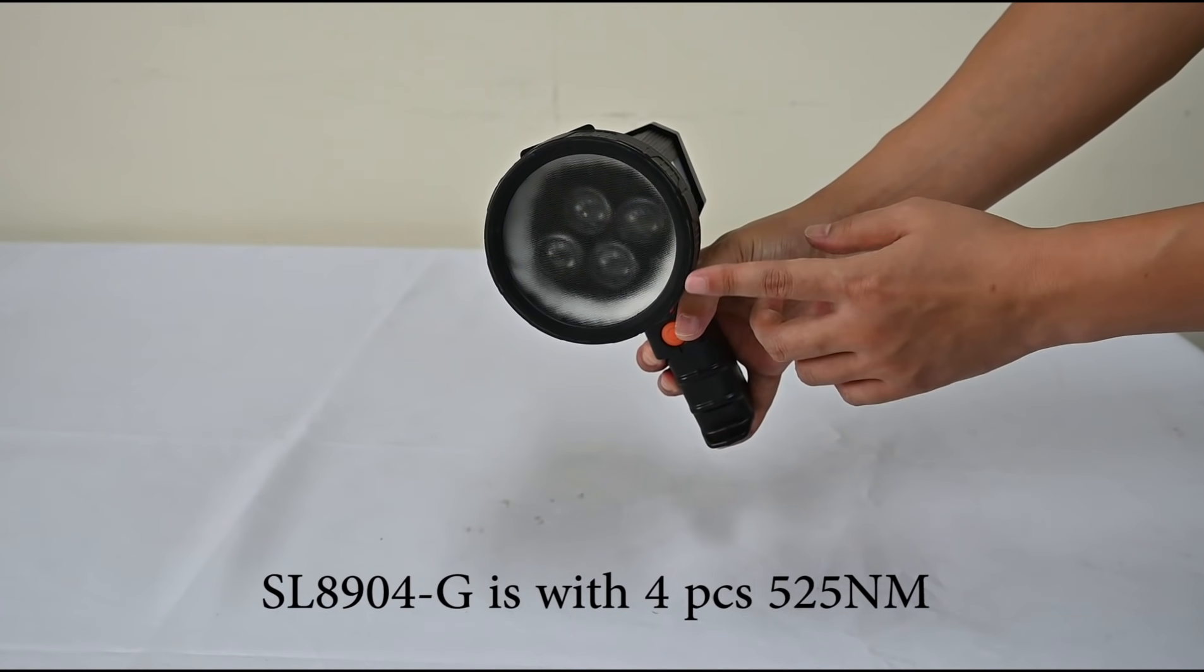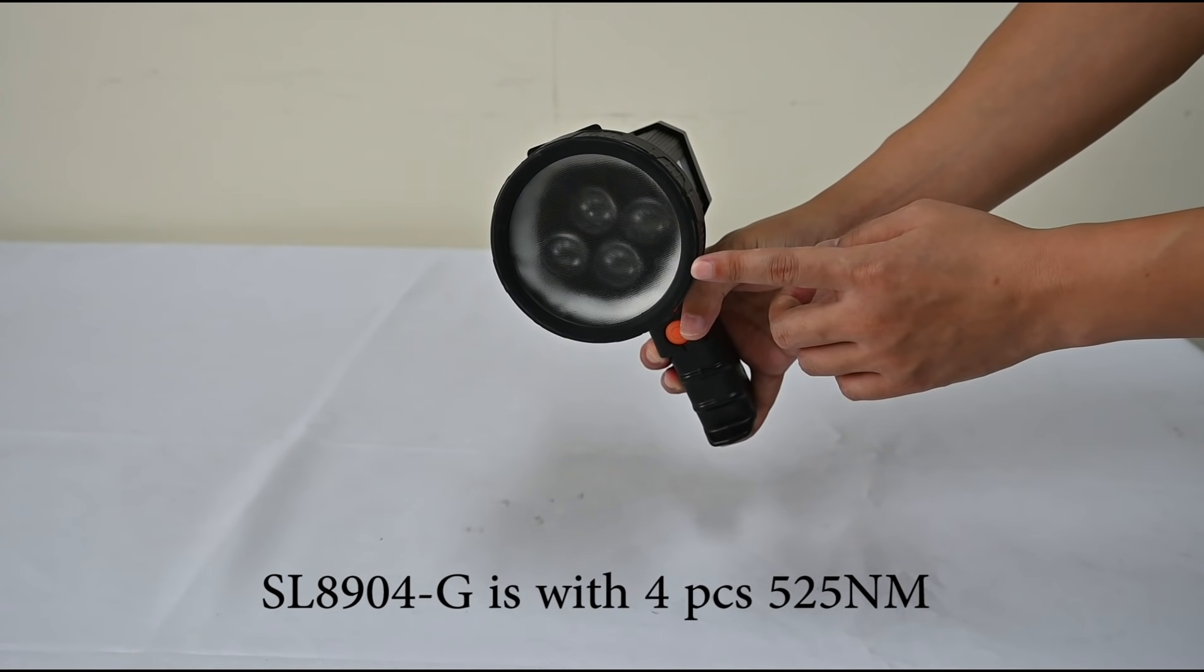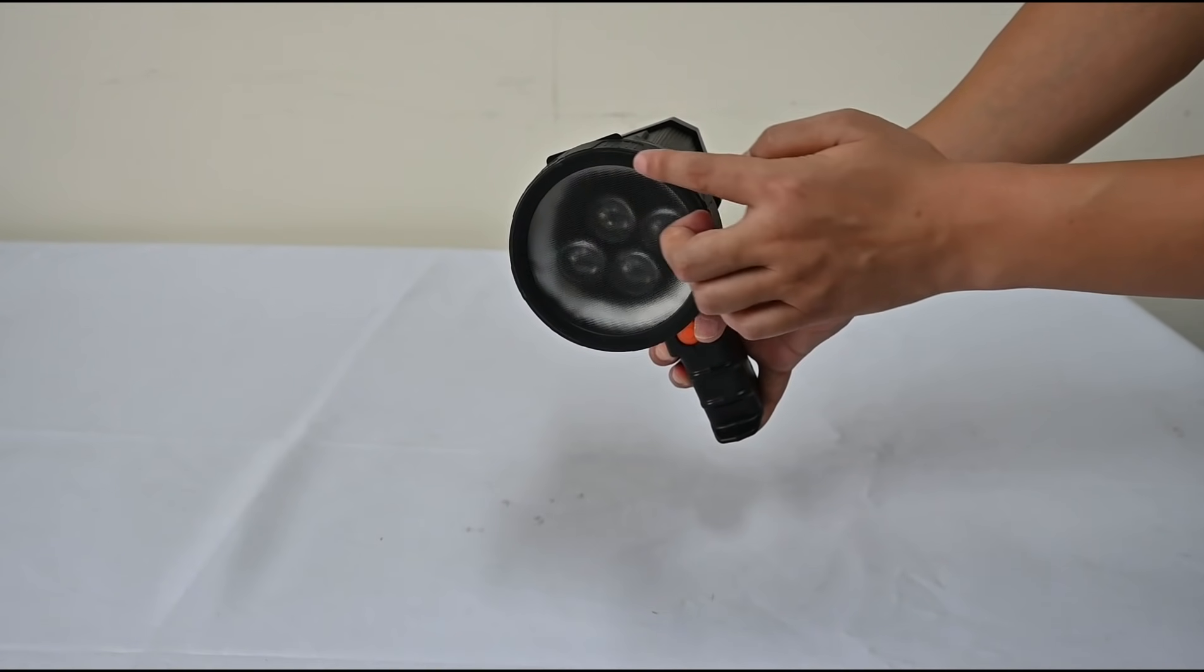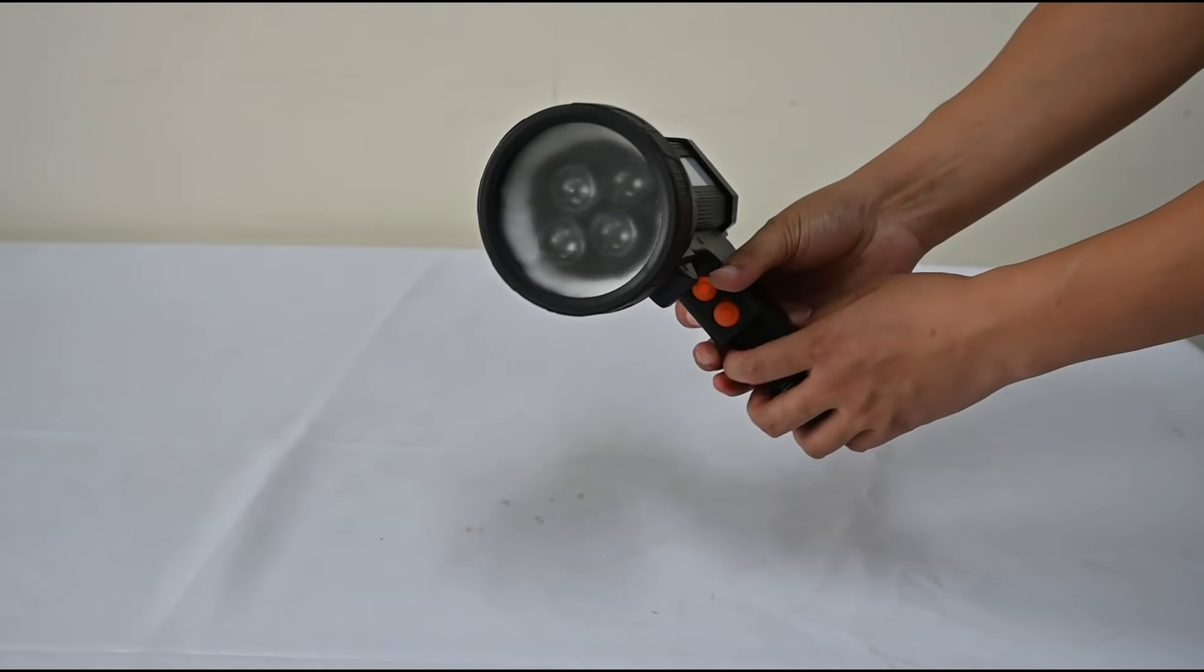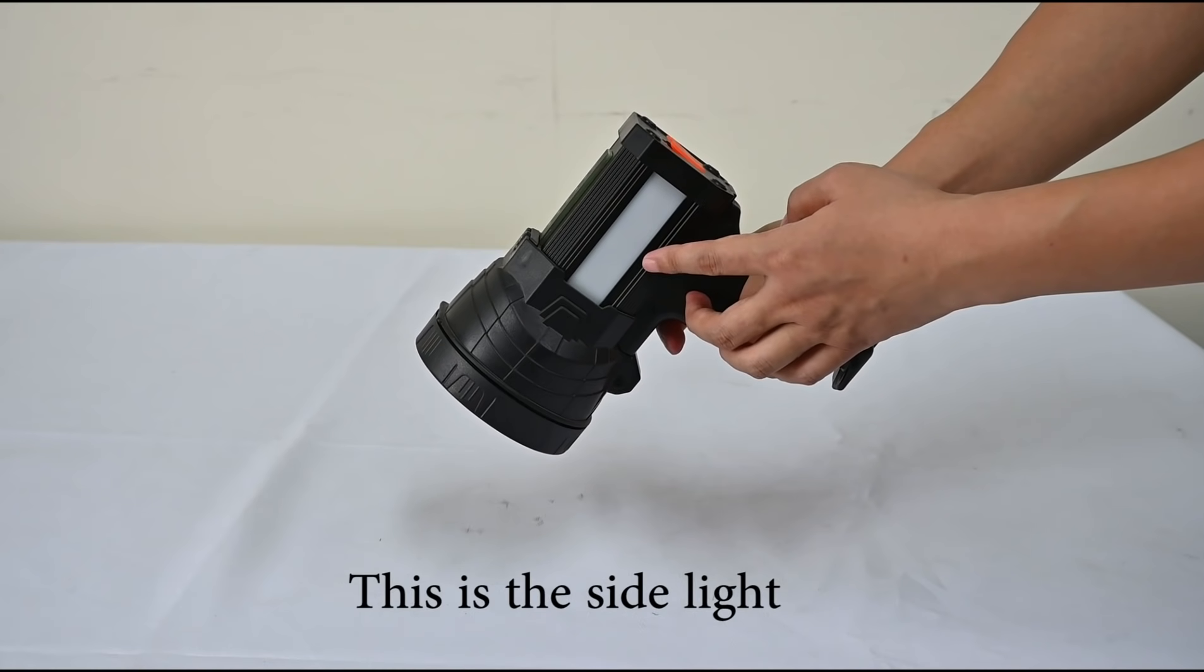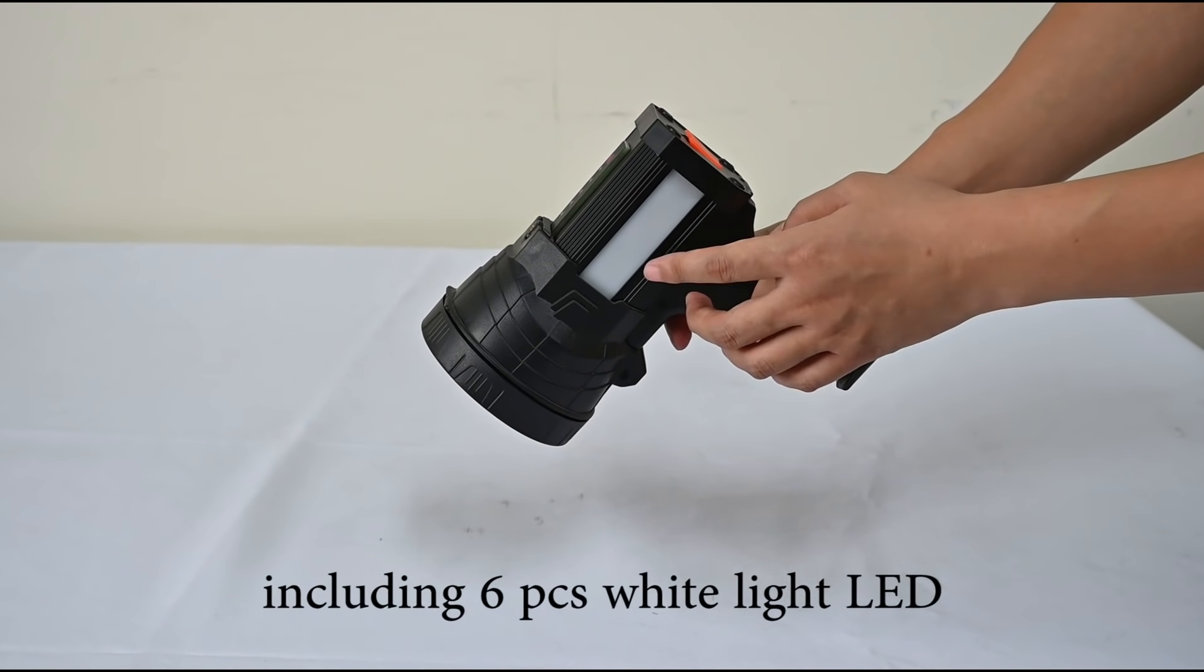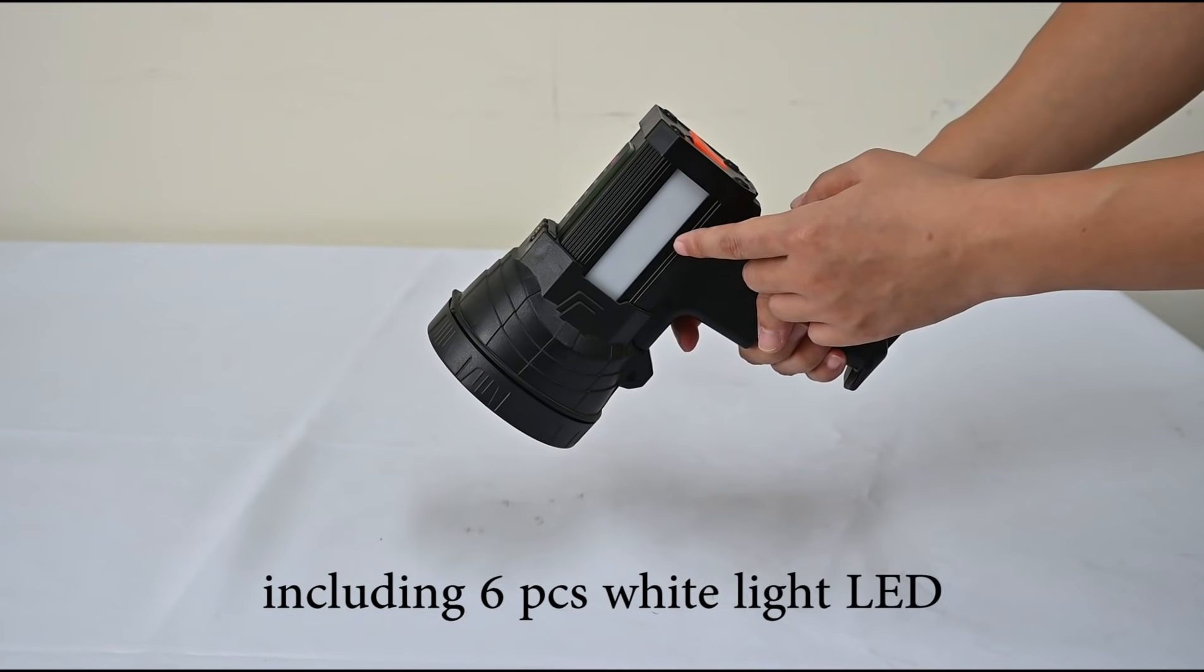SL-89O4G is with 4-piece 525nm green LED light source. And this is the satellite, which is designed for lighting. It includes 6-piece 1-watt LED.